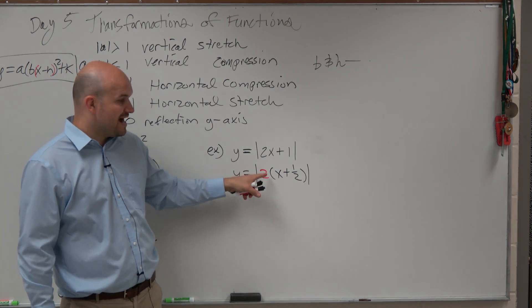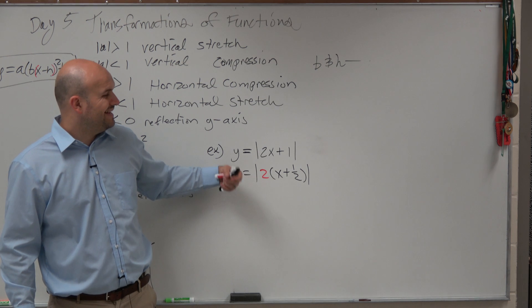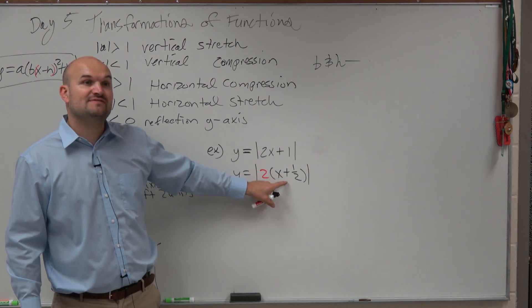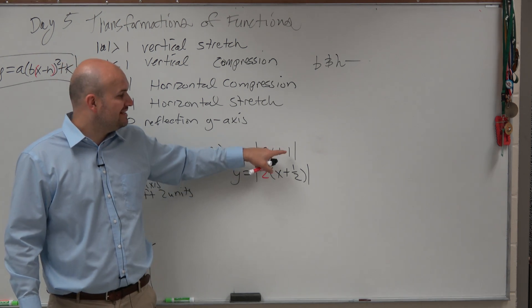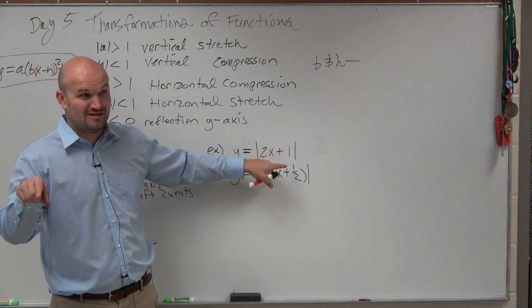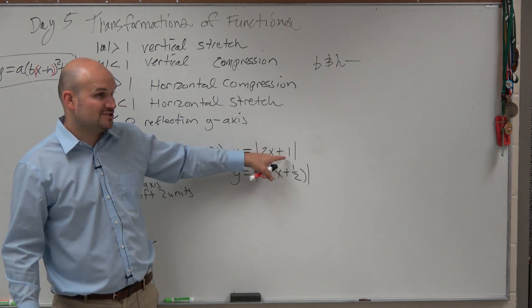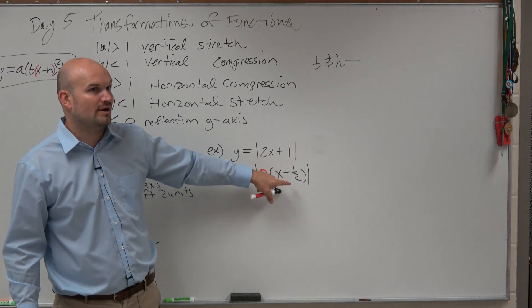So now we can see that the graph has a horizontal compression of 2 and the graph is being shifted to the left 1 half. Not being shifted to the left 1. And that's what the people that are not here are going to put on their quiz or test. I guarantee it. It's not being shifted to the left 1. It's being shifted to the left 1 half.